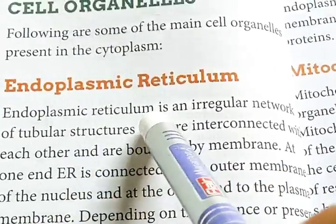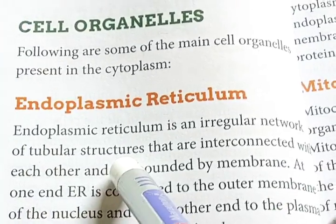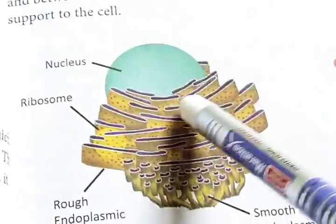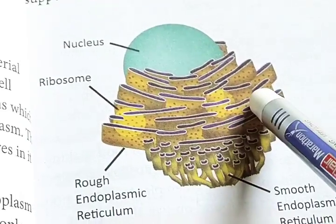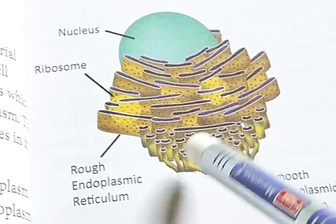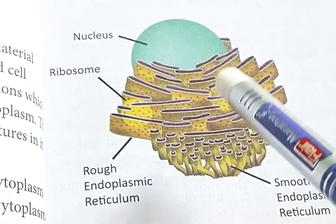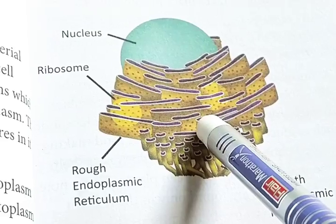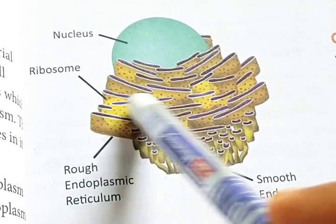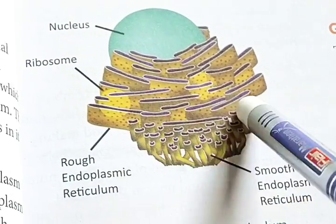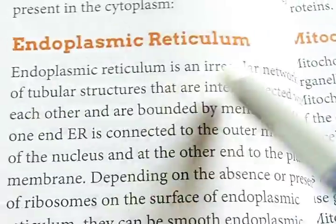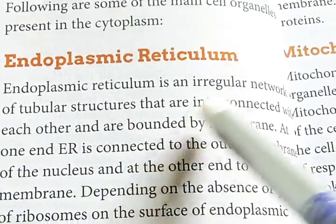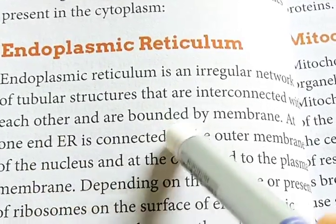Endoplasmic reticulum is an irregular network of tubular structure. Please follow the picture very carefully. They are situated in an irregular way, tubular in structure, and are interconnected with each other and surrounded by a membrane. Endoplasmic reticulum is an irregular network of tubular structures that are interconnected with each other and bounded by a membrane.